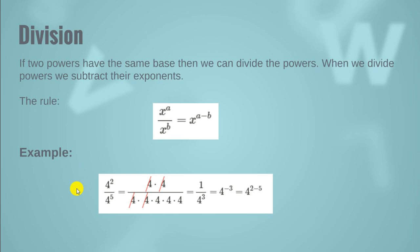Now, power in terms of division. If two powers have the same base, then we can divide the powers. When we divide powers, we subtract their exponents. In this example, we have x raised to the power a divided by x raised to the power b. To bring x raised to the power b from the denominator to the numerator, we subtract the exponent b from a, giving x raised to the power a minus b.